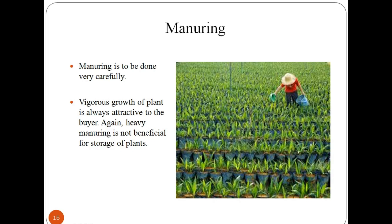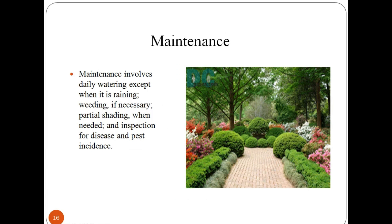Manure is a product obtained after decomposition of organic matter like cow dung, which replenishes the soil with essential elements and adds humus to the soil. Manure from different animals has different qualities and requires different application rates when used as fertilizer. Manure contributes to the fertility of the soil by adding organic matter and nutrients such as nitrogen that are trapped by the bacteria in the soil. Maintenance involves daily watering except when it is raining, weeding if necessary, partial shading when needed, and inspection for disease and pest incidence.